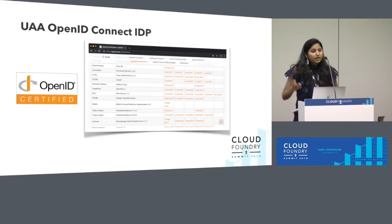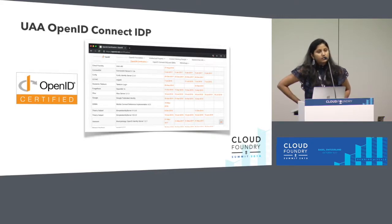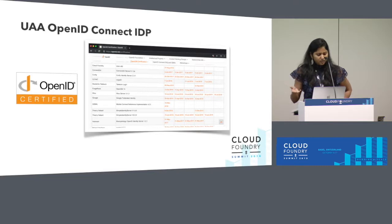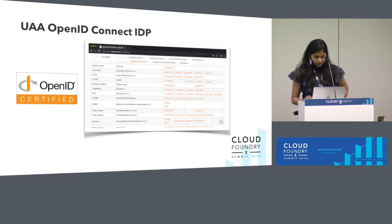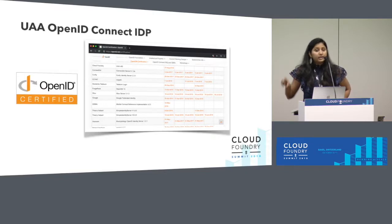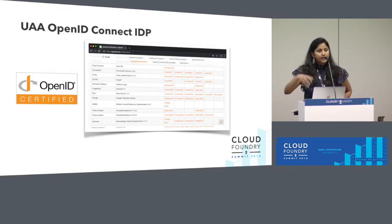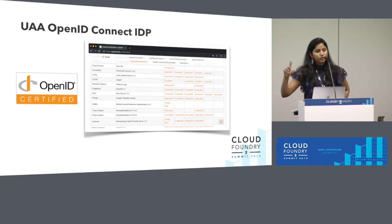UAA is now an OpenID Connect certified identity provider, and this is something we achieved a few months back. Starting with V60, we are an OpenID Connect certified IDP. There are two profiles: UAA acting as an identity provider, and relying party support. What we have certified to begin with is the IDP standard — the relying party profile has not yet been certified.